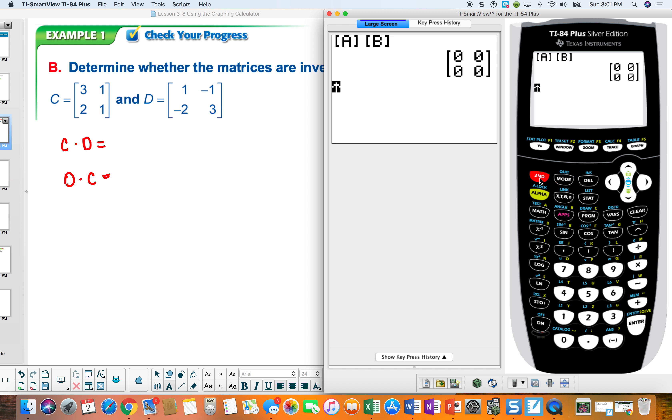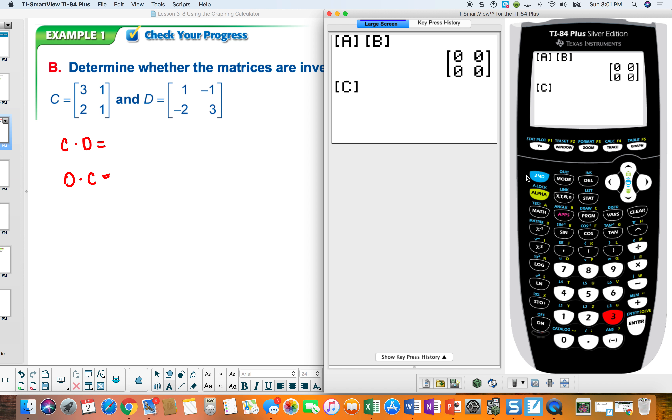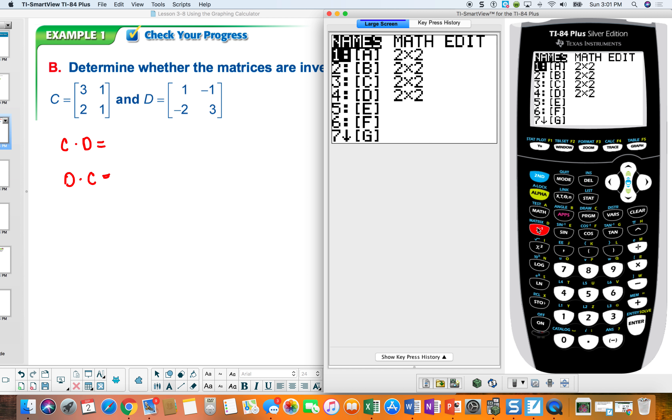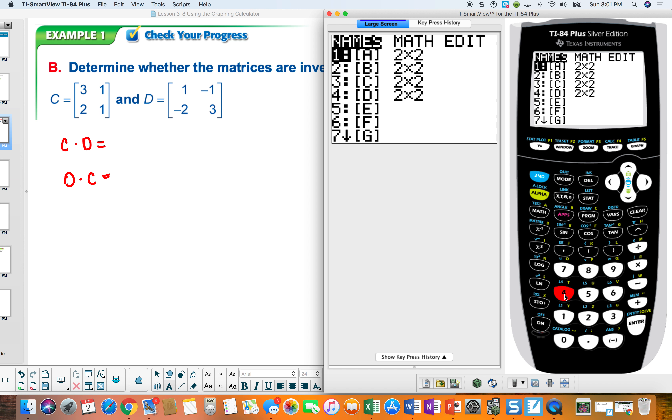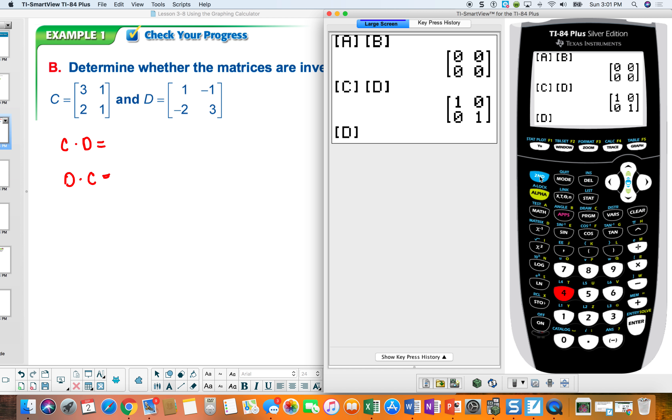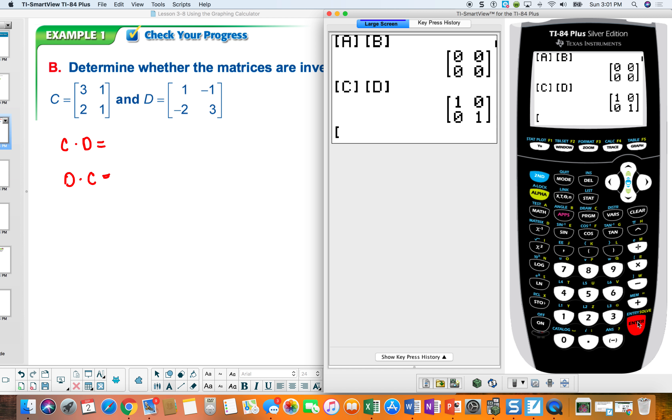Alright, second quit. And this time I'm going to do C, which is 3, times D, which is 4, and enter. And I get the identity matrix, which means matrix C and D look like they're inverses. Let me do it the opposite order, 4, second matrix, and then 3, and we get the same thing.